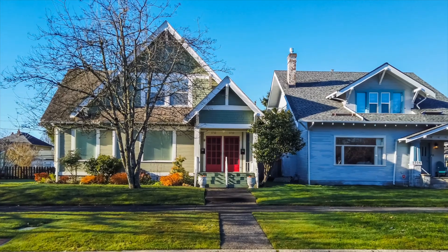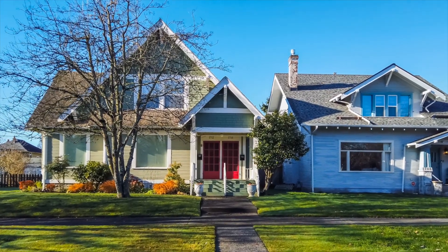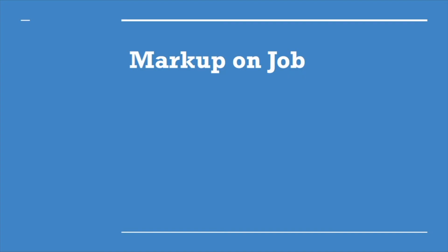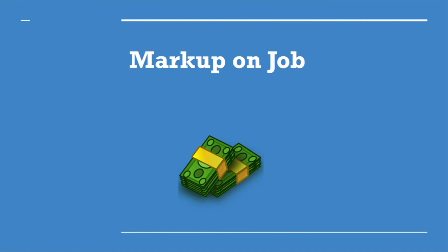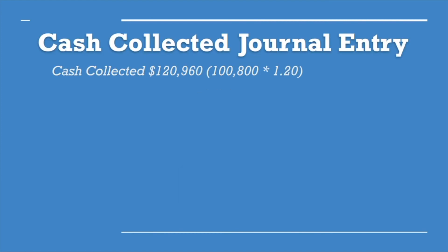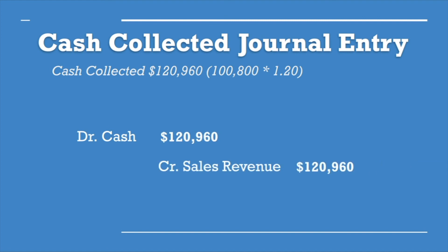At the end of the five months, the house is fully built and our neighbor is satisfied, so we can finally sell it to him. To set our price, we need to mark it up to get our profit — we mark it up at 20%. Taking our cost of $100,800, multiplied by 1.20, equals $120,960. We debit cash for $120,960 and credit revenue for $120,960.